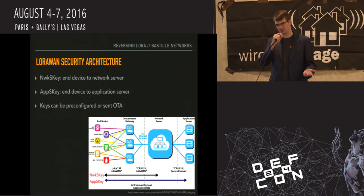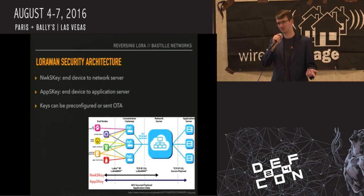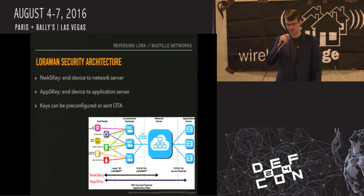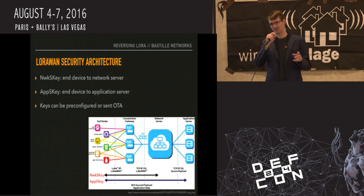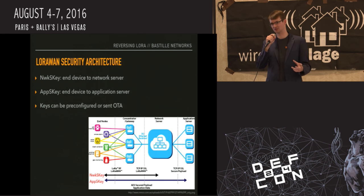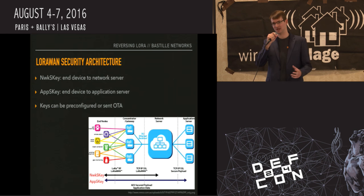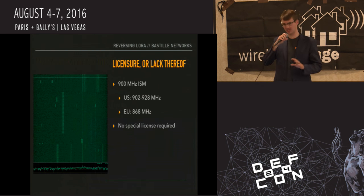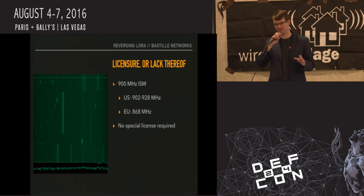LoRaWAN defines a whole bunch of security features. The MAC stack is controlled by an IP-based network server that does all the intelligent coordination. They define a security architecture that enables a unique key per device. There are two different keys: the application key, which is end-to-end between your application server and the end node, and a network key that protects everything going from the end node to the network server. As a developer you can use application keys so the carrier never sees your content in plain text.